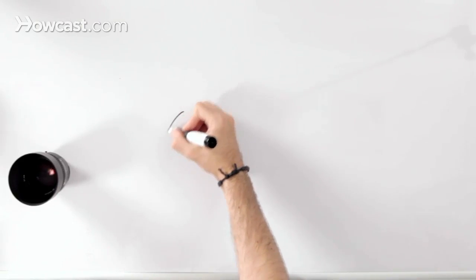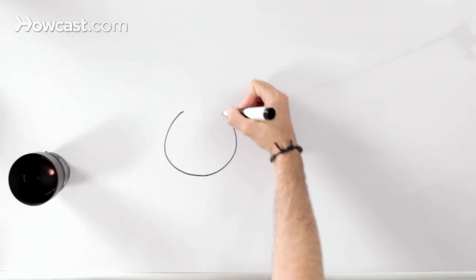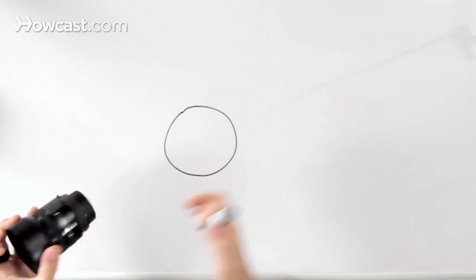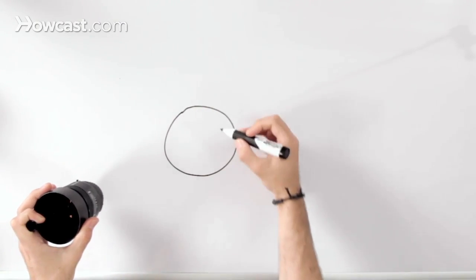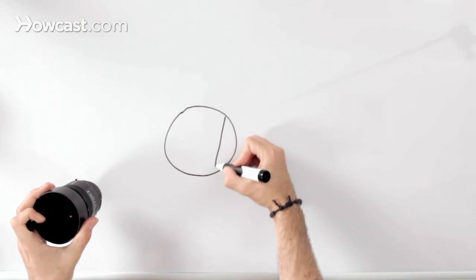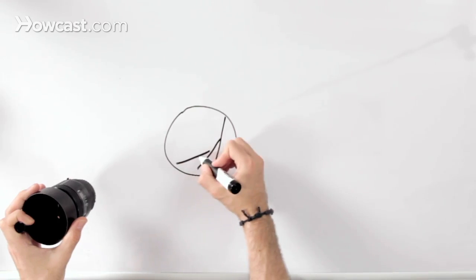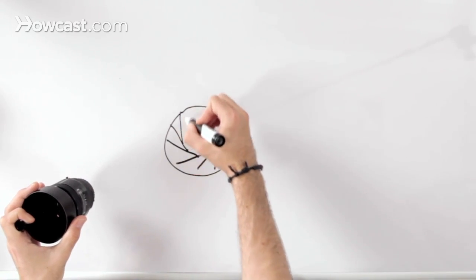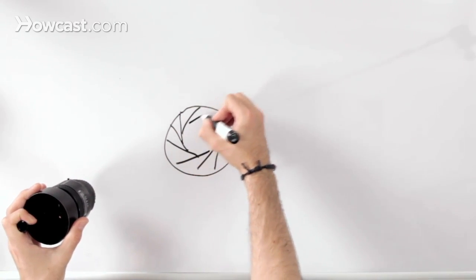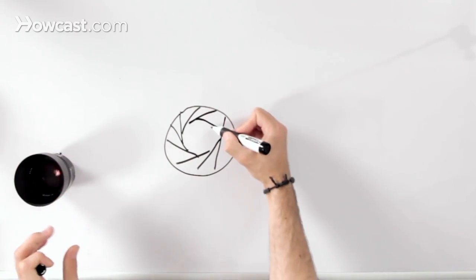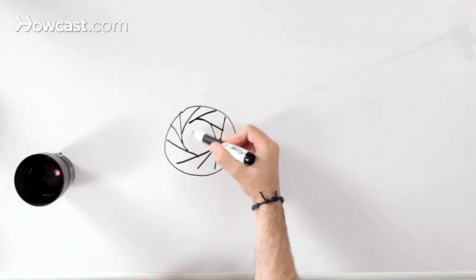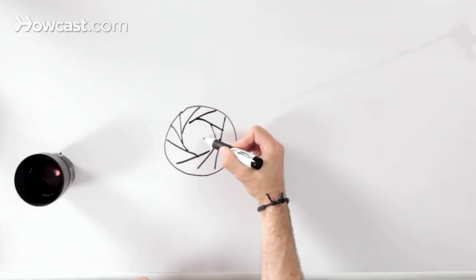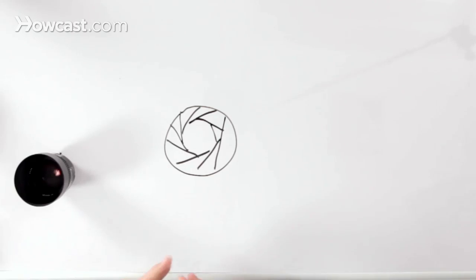I'm going to draw exactly what that aperture looks like, just to give you a basic idea. If this is the bottom portion of your lens, and generally they're made up of blades, it would look something like this. The light's going to pass through this circular area here, so you can control that area to control your exposure.